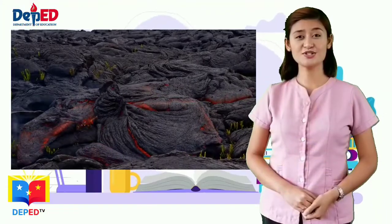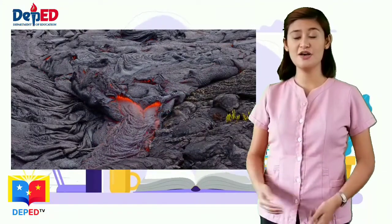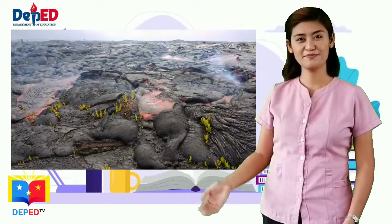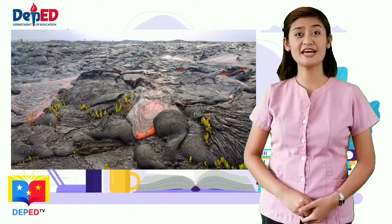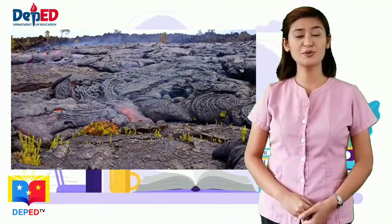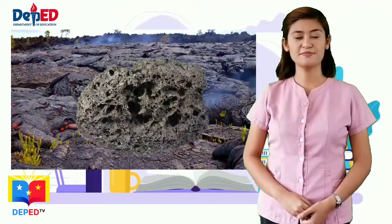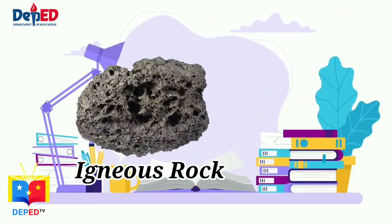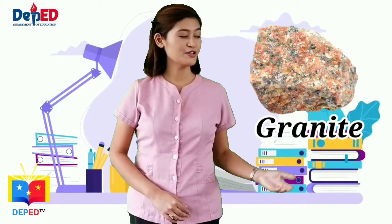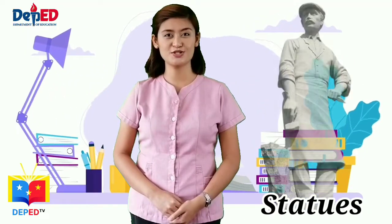Igneous rocks are formed from the solidification of molten rock material, lava, which flows out of a volcano. This lava cools and solidifies, and becomes an igneous rock. An example is granite, which is used in making statues.